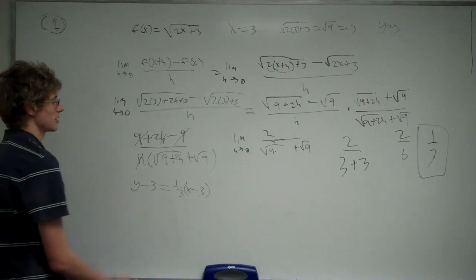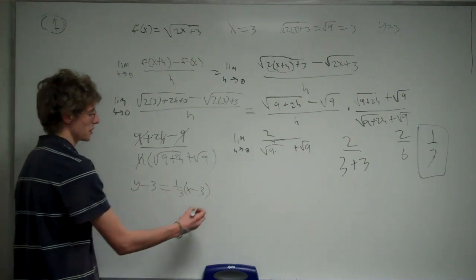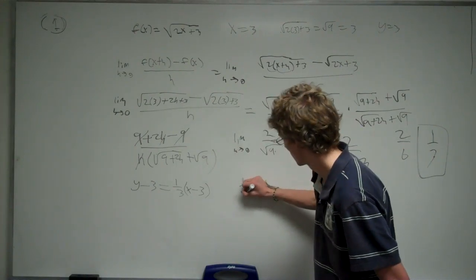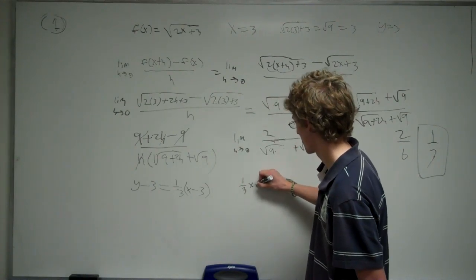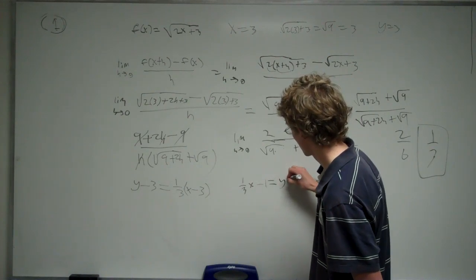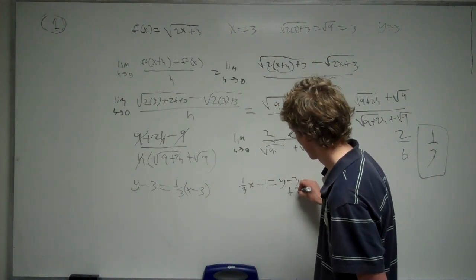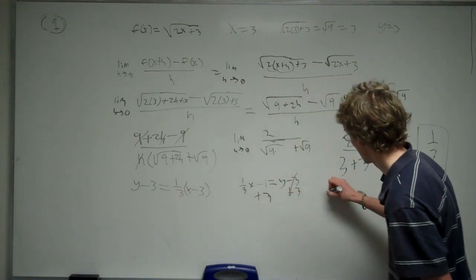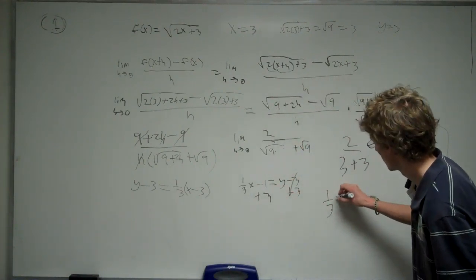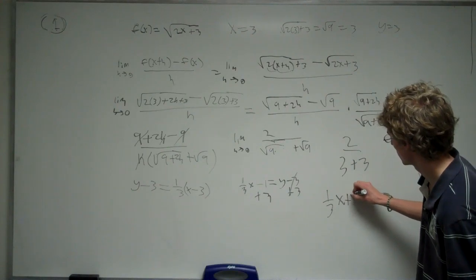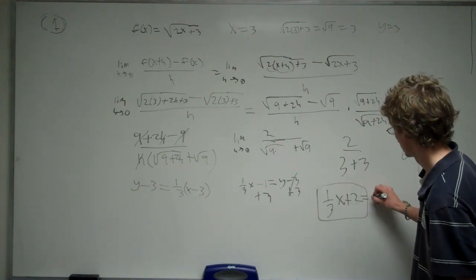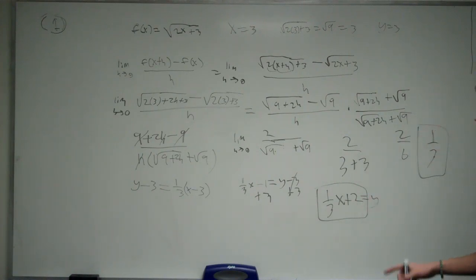And now from here we can simplify it. We can distribute the 1 third, so we're going to get 1 third x minus 1 equals y minus 3. Add 3 over, and we get y equals 1 third x plus 2. And that's our answer for the equation of a line, that's our answer for slope.